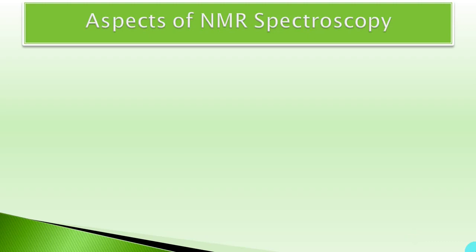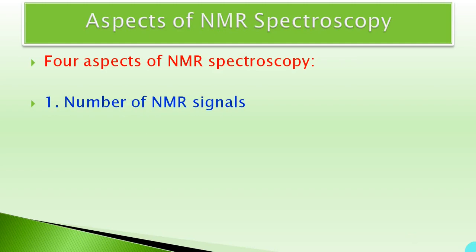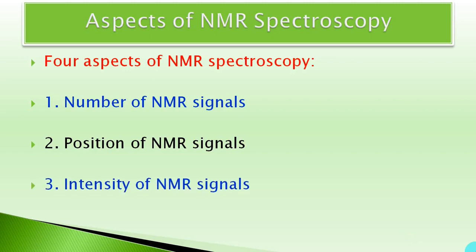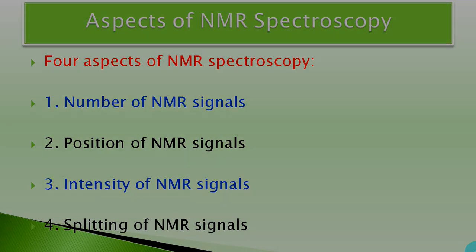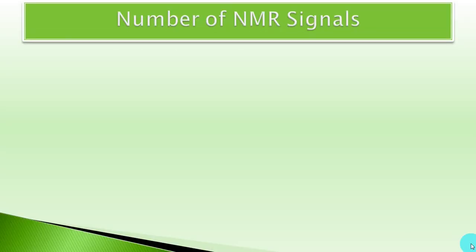The four aspects of NMR spectroscopy are: first, number of NMR signals; second, position of NMR signals; third, intensity of NMR signals; and fourth, splitting of NMR signals. Today we are going to learn the first aspect, that is number of NMR signals — meaning, if we take the NMR of an organic compound, how many signals or peaks will be obtained.